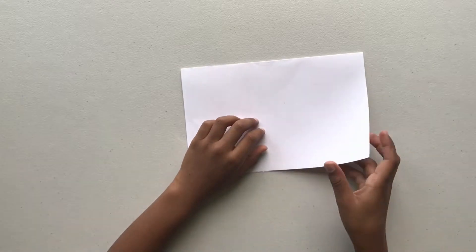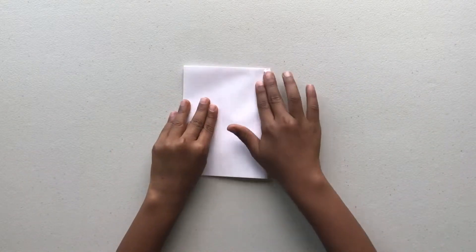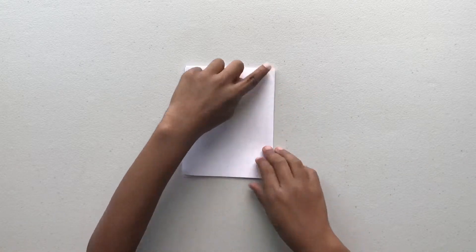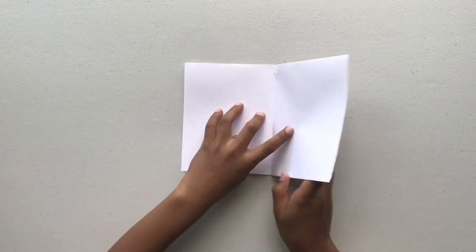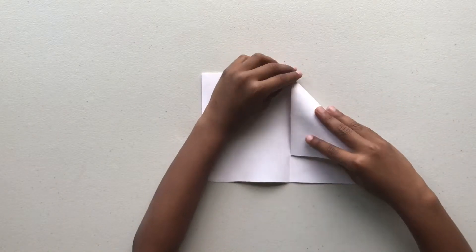Fold the paper in half again. Unfold the paper so your paper will look like this. Fold down the top corners to the middle of the paper.